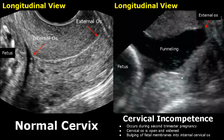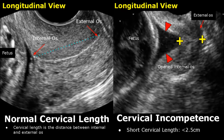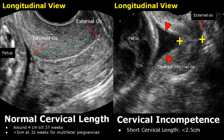Here is another image of cervical incompetence — this is the dilated cervix and this is funneling. Cervical length is the distance between internal and external os, measured by placing one caliper on the internal os and the other on the external os. The normal cervical length is around 4 cm until 37 weeks and less than 3 cm at 32 weeks for twin pregnancies. A short cervix less than 2.5 cm is suggestive of cervical incompetence.